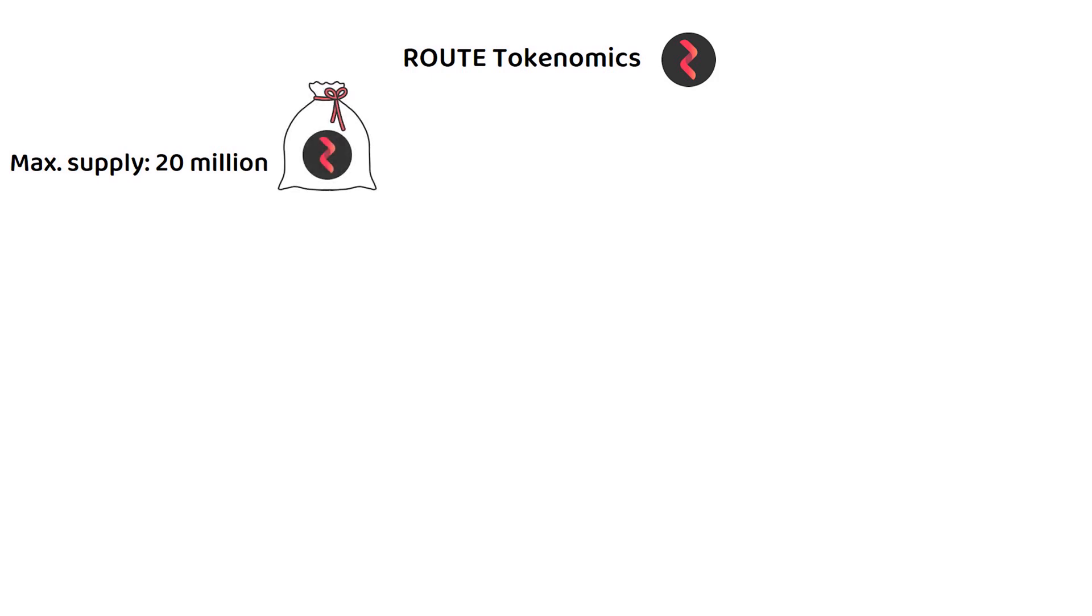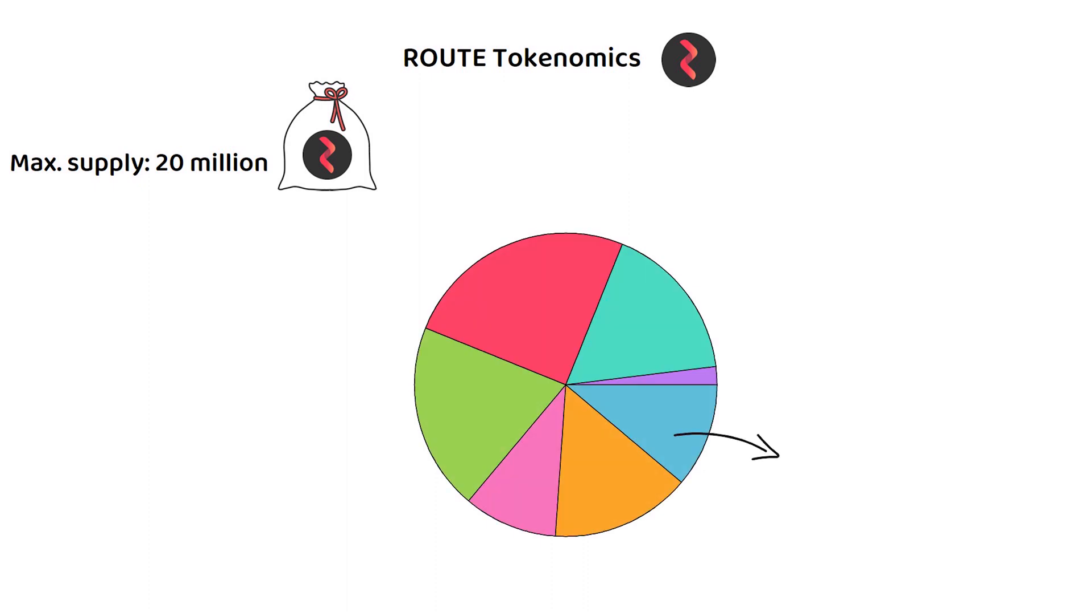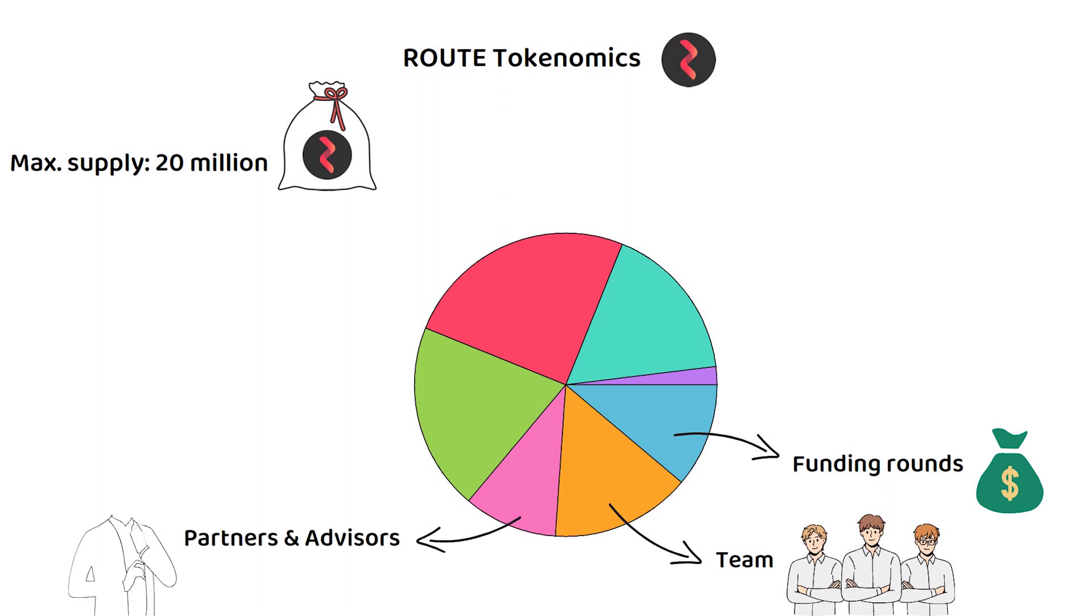The distribution of Rout is as follows. In total, 11% was sold during either seeding or private funding routes. 15% was allocated to the Rout protocol team, 10% to partners and advisors, with 20% also going to the Router Foundation, which looks after the maintenance of the blockchain.